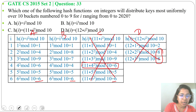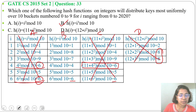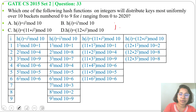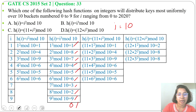Only Option B remains, so we can declare Option B as the answer. Let's verify with more values: for i = 7, 7³ mod 10 = 3; for i = 8, 8³ mod 10 = 2; for i = 9, 9³ mod 10 = 9; for i = 10, 10³ mod 10 = 0. Checking the hash values: 0, 1, 2, 3, 4, 5, 6, 7, 8, 9 — it is distributed uniformly.